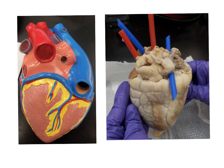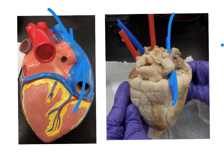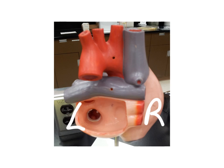Now looking at the dorsal view, we can clearly see the superior and inferior vena cava. There is the superior vena cava carrying deoxygenated blood, and there is the inferior vena cava. We can see the superior vena cava and inferior vena cava returning blood to the right atrium.